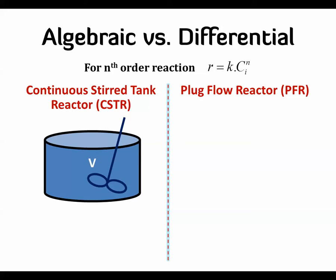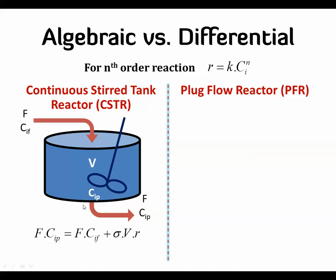For the CSTR, it's a very large tank filled with reactants. We put in the feed with a known flow rate and composition, let the reaction proceed, and end up with a product at flow rate F and concentration. The equation is simple because we assume that, since it's a very large tank, the composition inside is not affected by the feed composition.